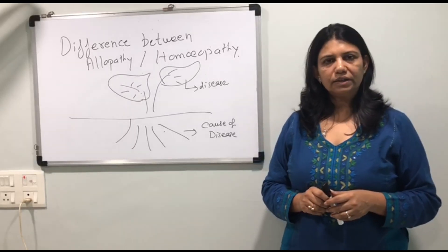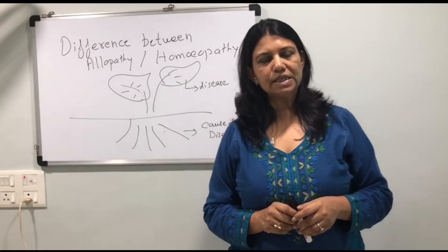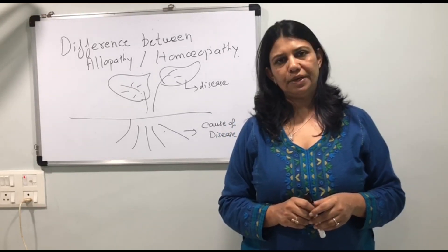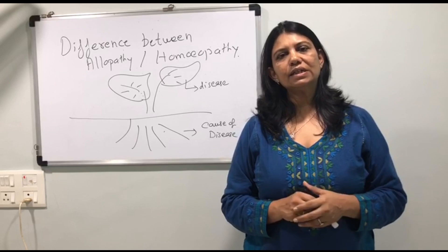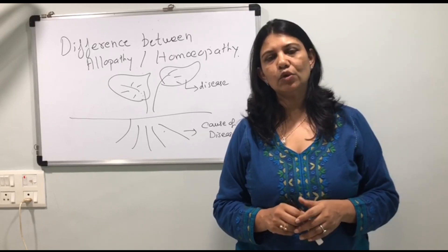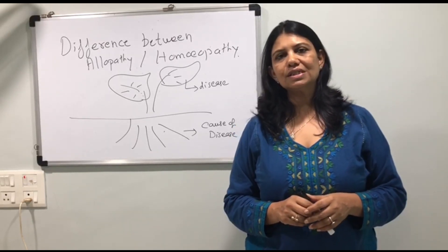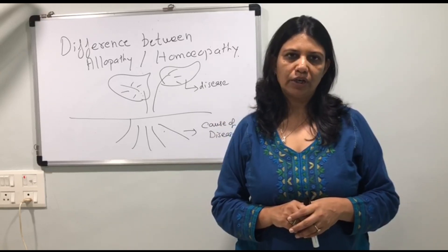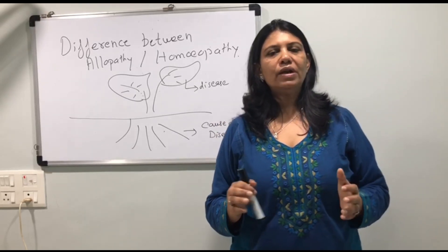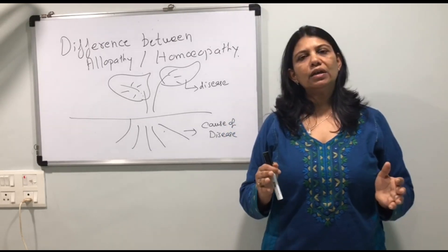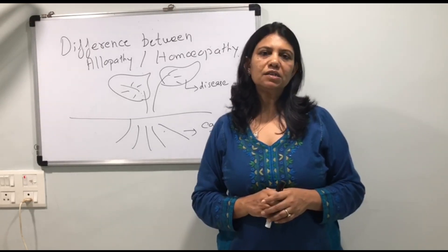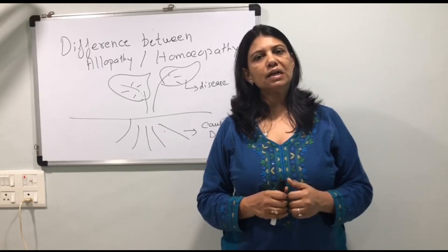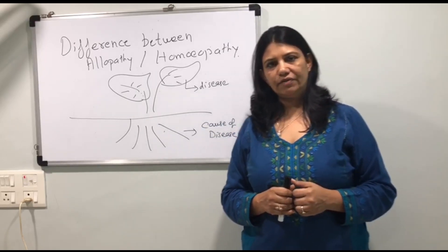Today I would like to share the difference between homeopathic science and allopathic science, how to treat a patient. Disease is a phenomenon. Disease does not start as soon as the bacteria enters in your body. Our life is totally run with a resistant power — the immunity power. Immunity power makes us healthy in our life.